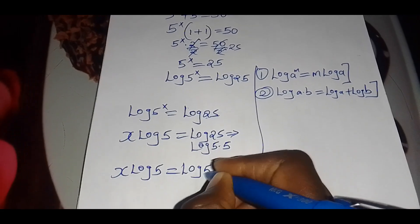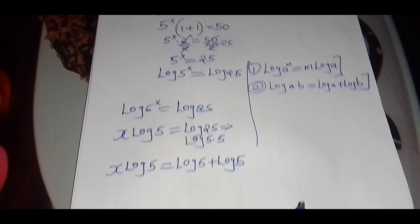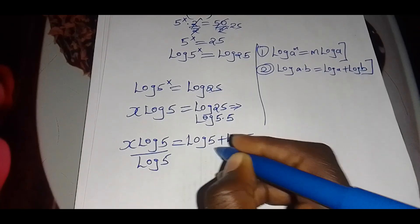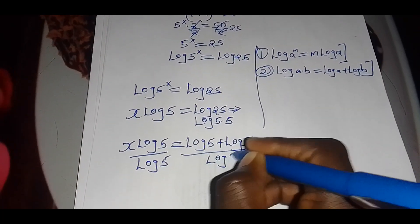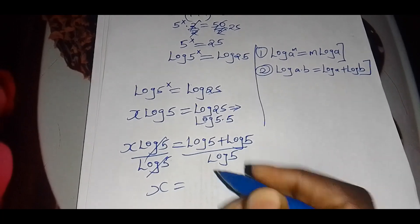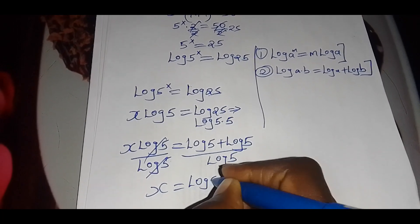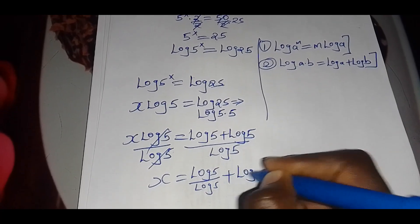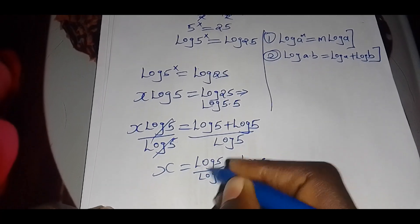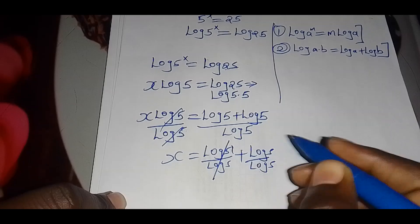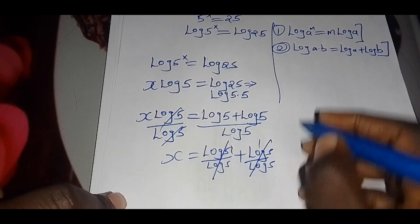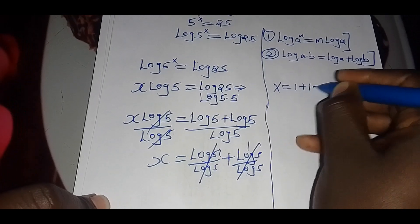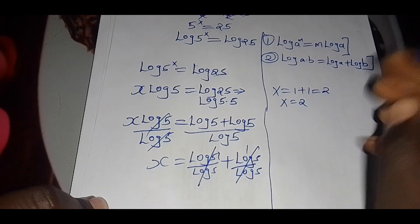We divide both sides by log 5. On the right side, we get log 5 divided by log 5 plus log 5 divided by log 5, which simplifies to 1 plus 1. So x is equal to 1 plus 1, which equals 2. The value of x is 2.